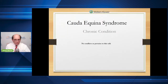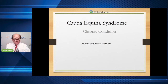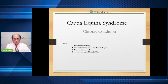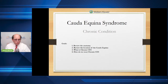Starting on the slide, as with yesterday, I have no conflicts as pertains to this talk — not being reimbursed, doing this for the patients. The goals of this talk on the chronic condition is to extend what we talked about yesterday. I'm going to start with a little bit of background, reviewing the anatomy. If people missed yesterday's talk, this will get you up to speed. Then I'll get to the meat of the talk — what is chronic cauda equina syndrome, and how do we treat it? Very personalized care is critical for this.